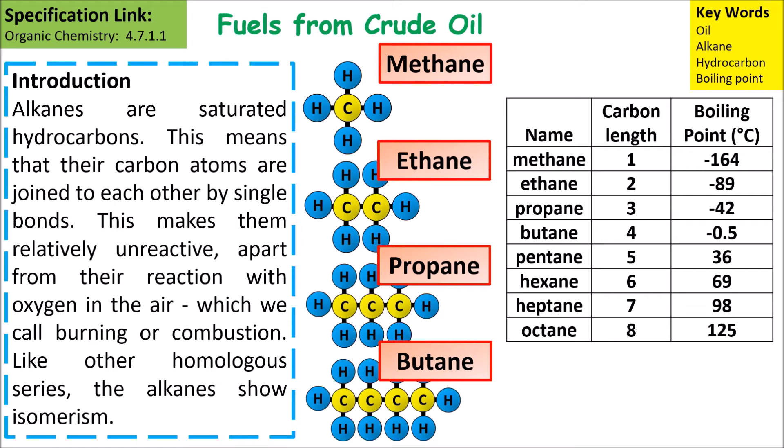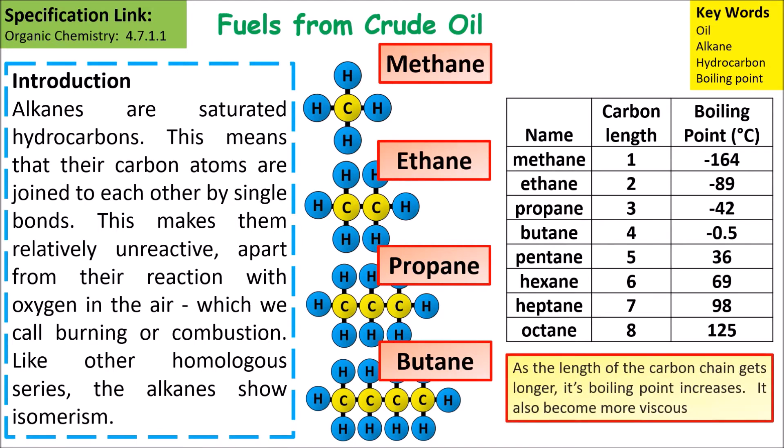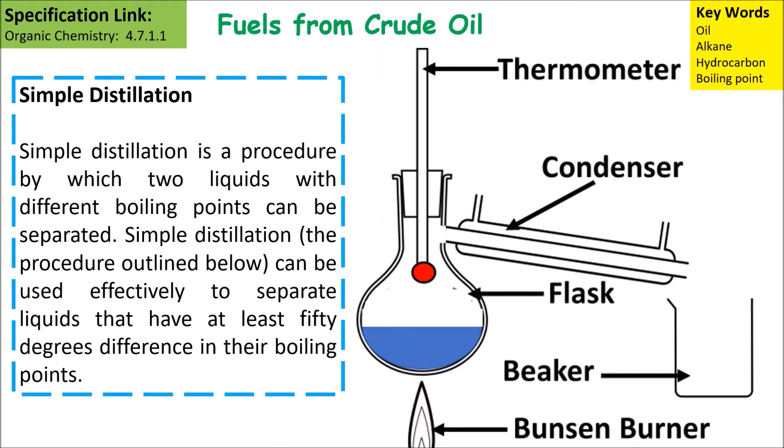Methane has a very low boiling point, which is why it's a gas, whereas octane has a much higher boiling point, which is why it forms a liquid. As the length of the carbon chains gets longer, its boiling point increases. It also makes it more viscous.